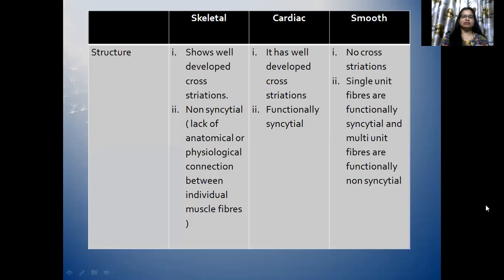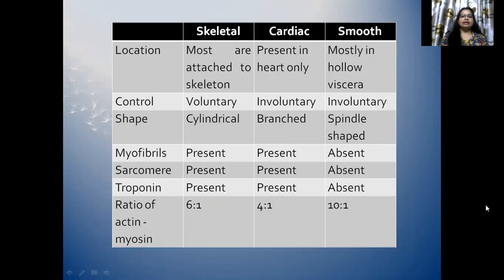In characteristics of different muscles — first, structure: skeletal muscle shows well-developed cross-screation and non-screation, meaning plate of anatomical or physiological connection between individual muscle fibres. Cardiac muscle has well-developed cross-screation and is functionally syncytial. Smooth muscle has no cross-screation; single unit fibres are functionally syncytial and multi-unit fibres are functionally syncytial. Location: skeletal muscles are attached to skeleton; cardiac muscles present only in heart; smooth muscles present in hollow viscera. Control: skeletal muscles are in voluntary control and cardiac and smooth muscles are in involuntary control. Shape: skeletal muscles are cylindrical; cardiac muscles are branched; smooth muscles are spindle-shaped.